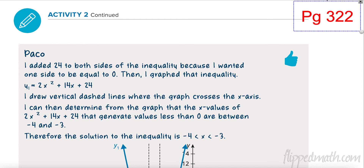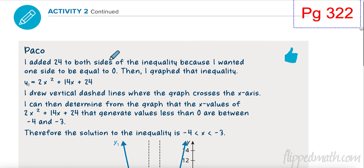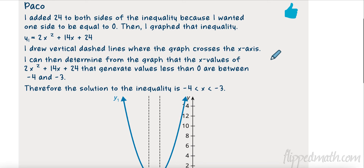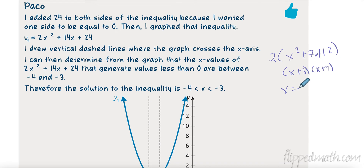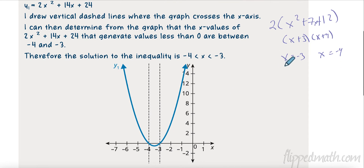On page 322, this is Paco's method. Paco set it equal to 0 by adding 24, getting 2x² + 14x + 24. He then found his zeros by factoring — he took out a greatest common factor of 2, giving x² + 7x + 12, which factors as (x + 3)(x + 4). So when x = −3 and x = −4, those are his zeros. You can find zeros by factoring or by plugging into your calculator. Sometimes factoring is a lot faster.